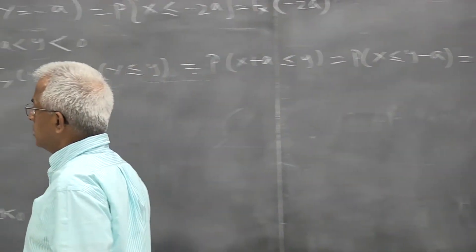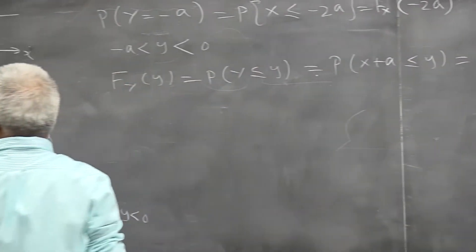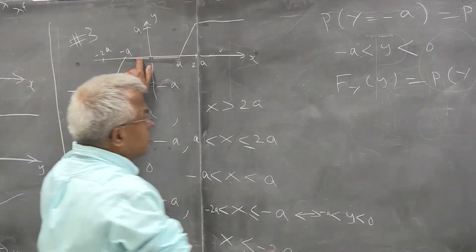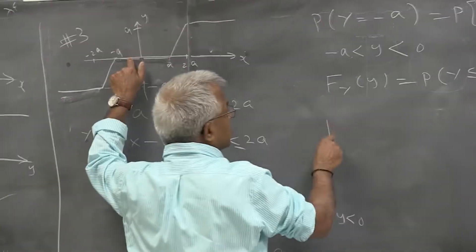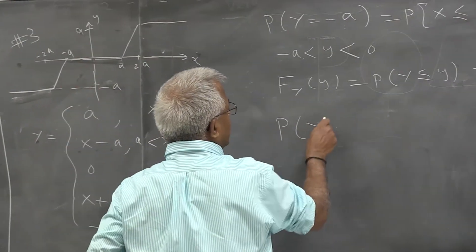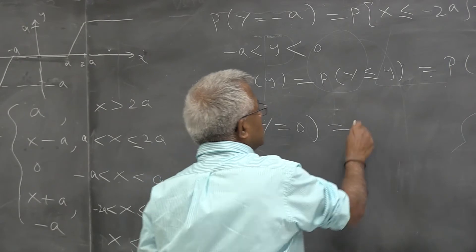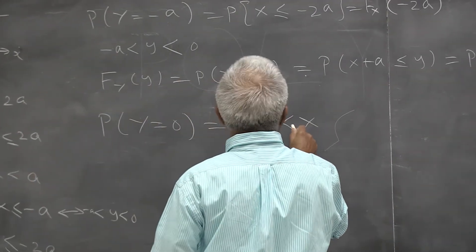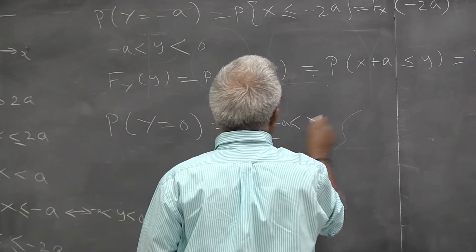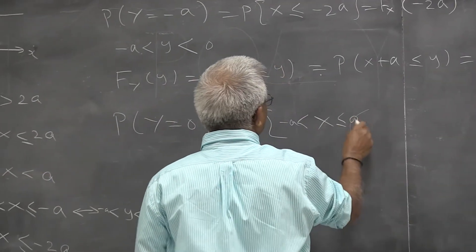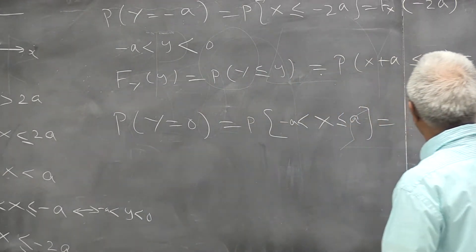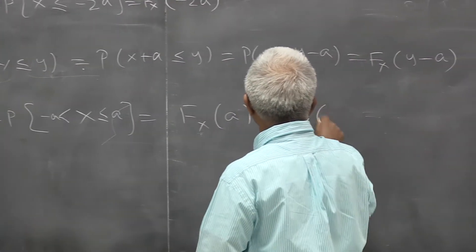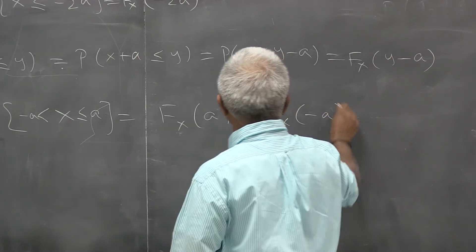Another thing we notice is that y takes the value of zero, so the probability of y equal to zero is when x is between minus a and plus a. So this is FX(a) minus FX(minus a).